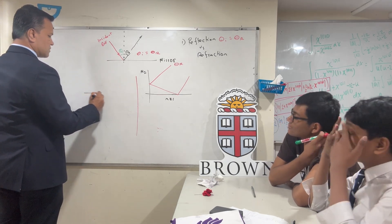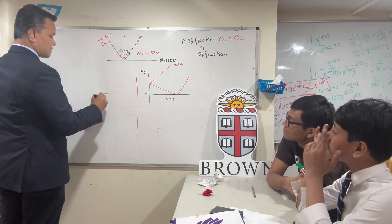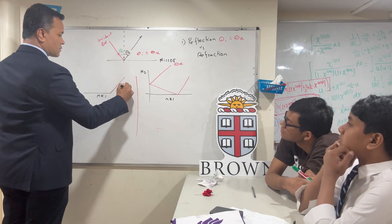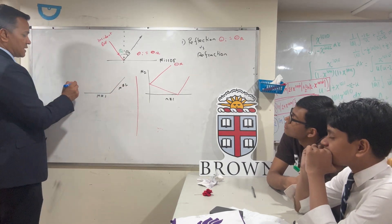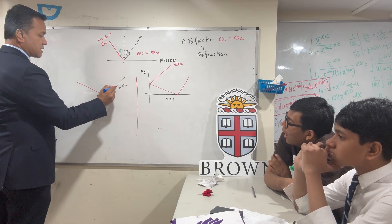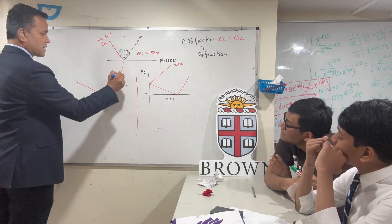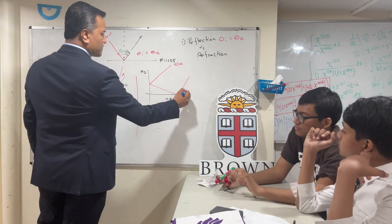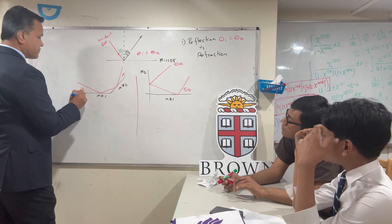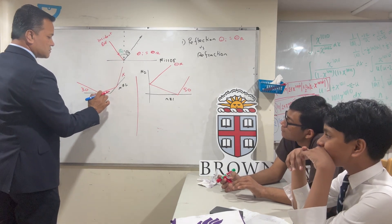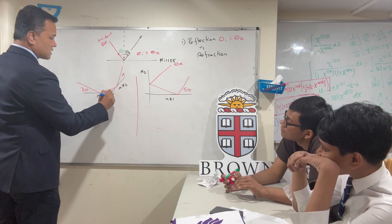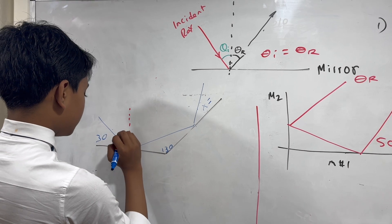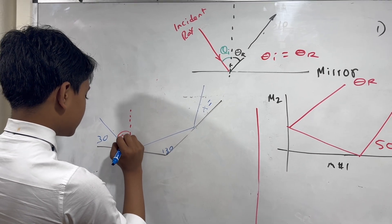I have mirror one and mirror two with an incident angle that strikes mirror one and bounces off. I'm going to give this angle 50, this one 30, and this one 130. So 30 plus this equals 90, which makes it 60 degrees.